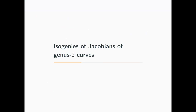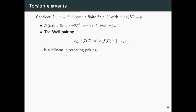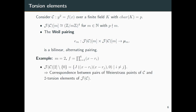Moving on to isogenies of Jacobians of genus 2 curves. Before talking about isogenies, we need to discuss torsion elements, because as for elliptic curves, isogenies are defined by their kernel — a finite subgroup of the Jacobian. For elliptic curves, the m-torsion is isomorphic to (ℤ/mℤ)². Here in genus 2 we get (ℤ/mℤ)⁴; more generally for genus g, the exponent is 2g. We also have a Weil pairing defined on this torsion, which will become very important for defining isogenies.